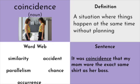Starting off with our first word, it is a noun and it's coincidence. Coincidence is when a situation happens where things happen at the same time or without planning. Word web words: similarity, accident, parallelism — remember parallel from geometry where two lines go in the same direction. A coincidence is essentially when something happens that is the exact same as something else. For example, it was a coincidence that my mom wore the exact same shirt as her boss. They didn't plan it — it just happened to be the same.